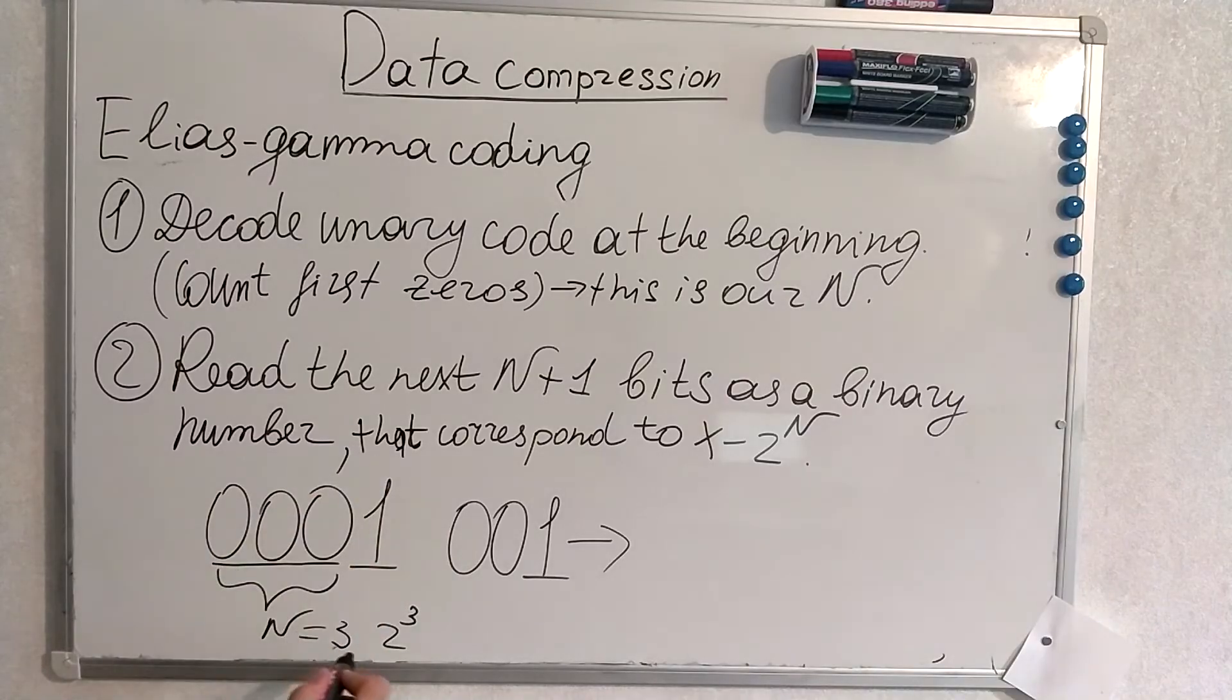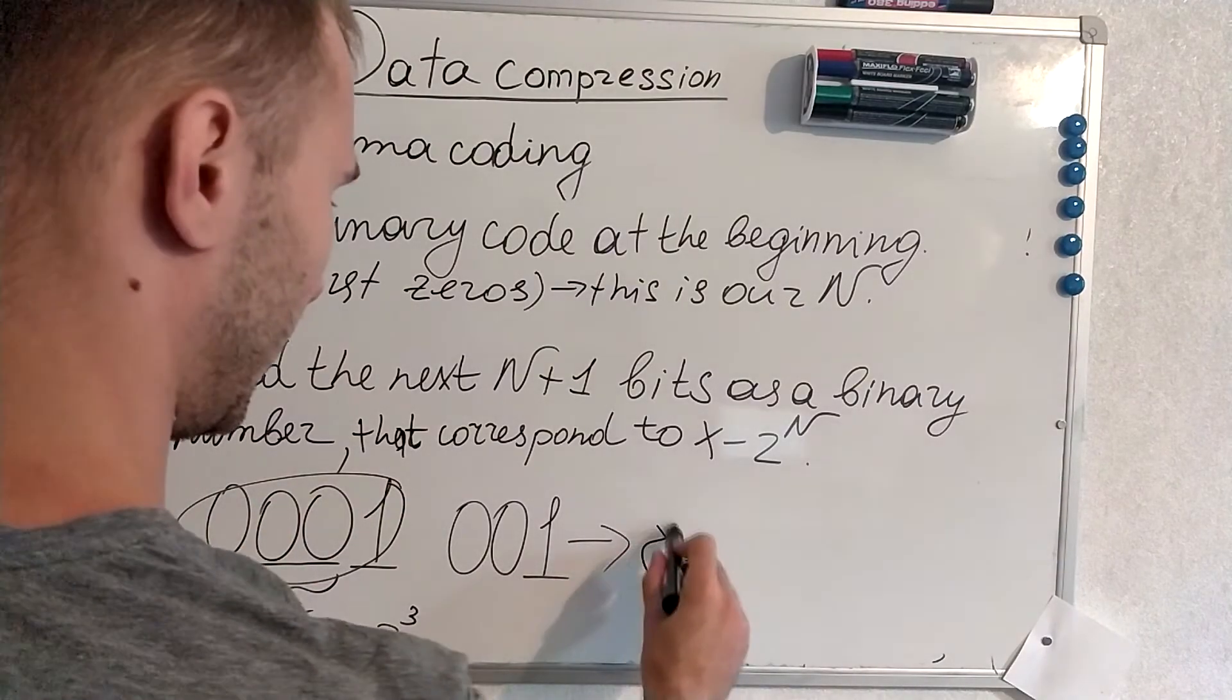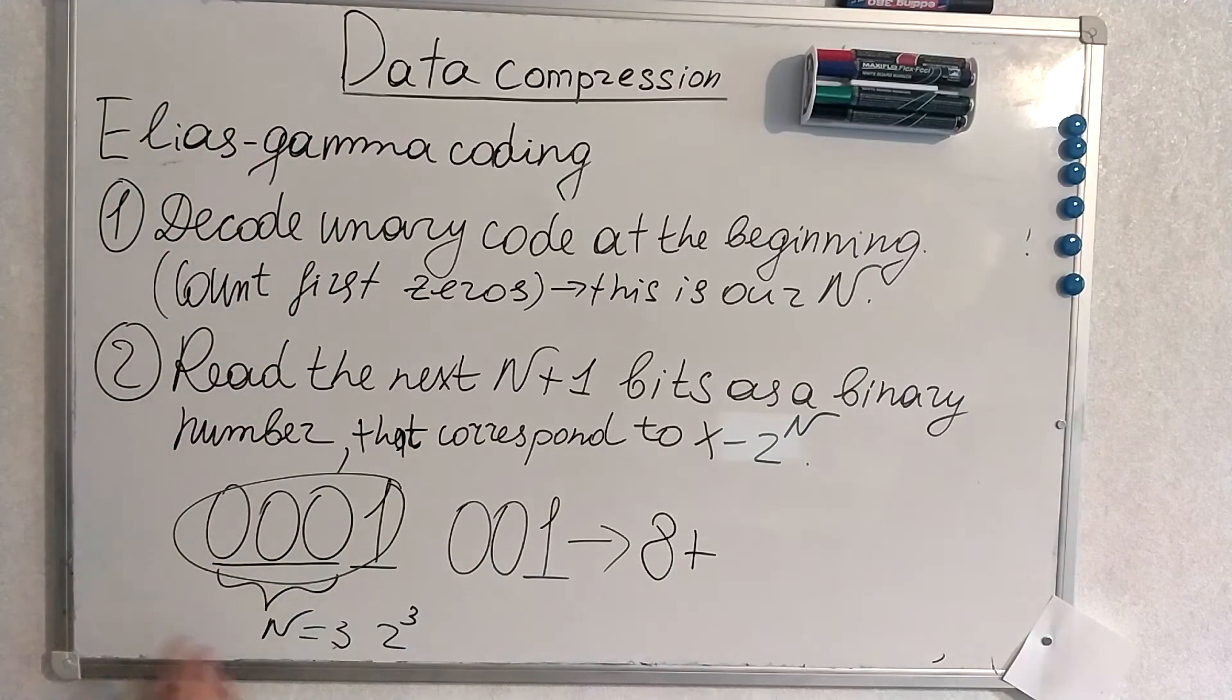That means it's 2 to the third power. Number 8 is contained here. So we know 8 plus something will be our number which is encoded by this sequence.